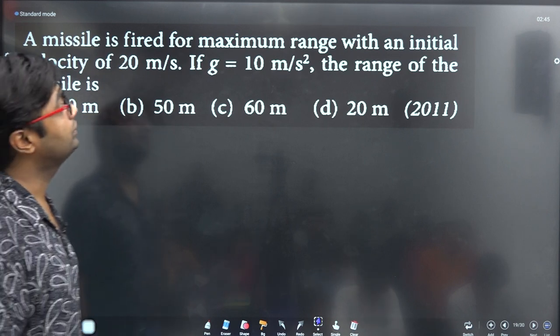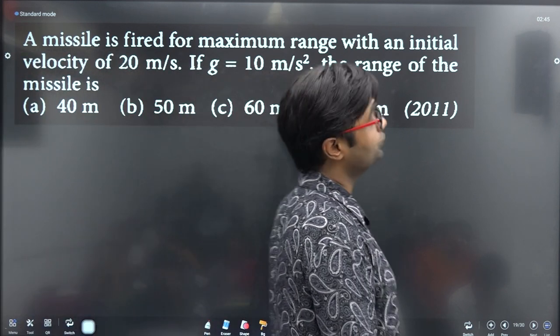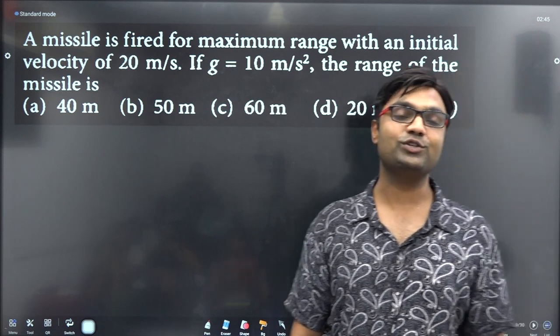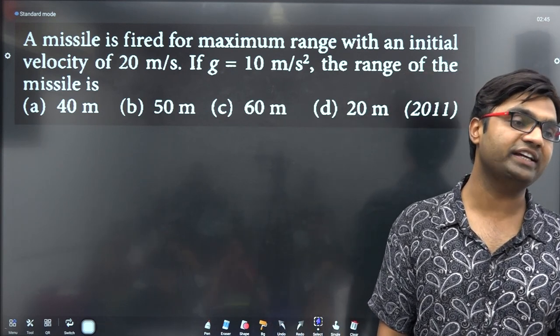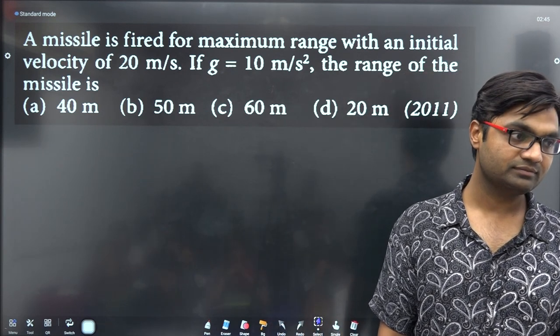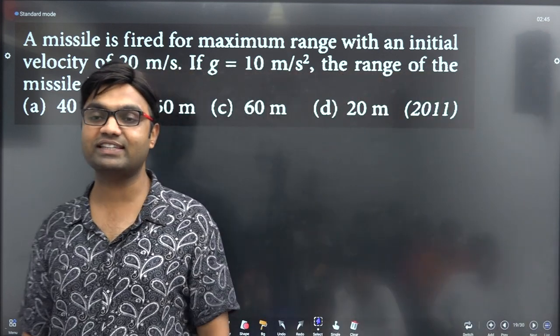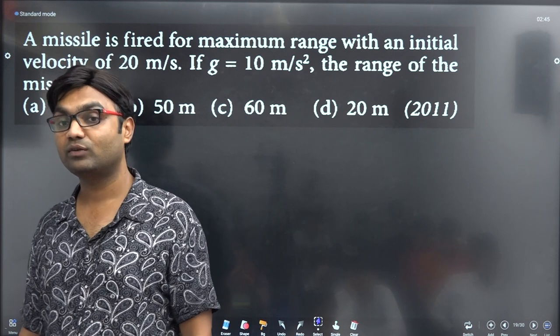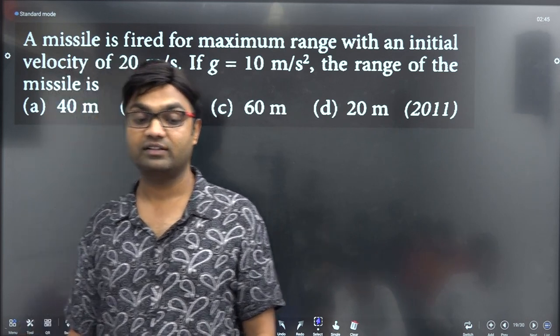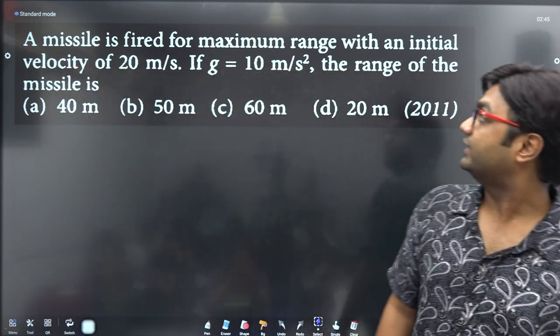A missile is fired for maximum range. For maximum range, the angle is 45 degrees. At 45 degrees, the range is maximum.